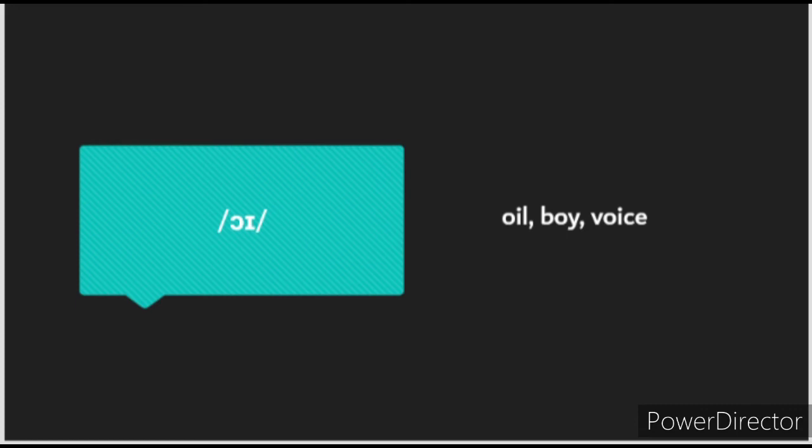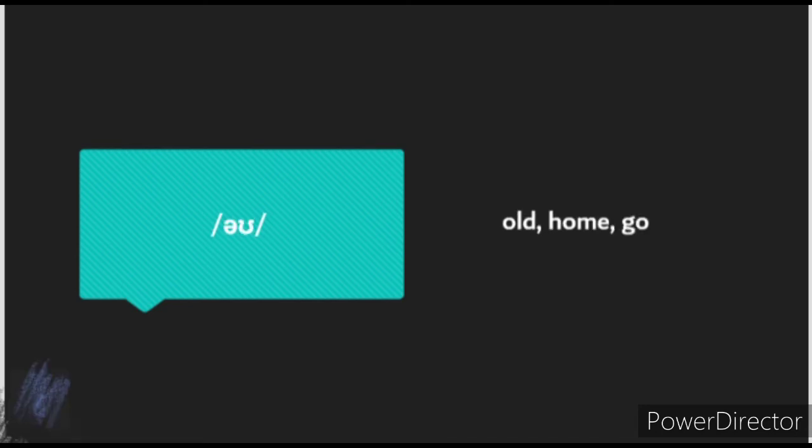The next sound is /ɔɪ/, as in 'oil', 'boy', and 'voice'. The vowels in combination are O and E. The next sound is /oʊ/, which is a combination of E and U, as in 'old', 'home', and 'girl'.